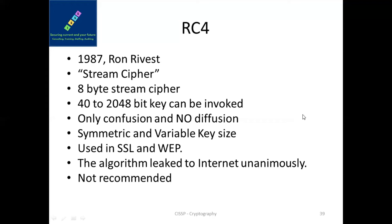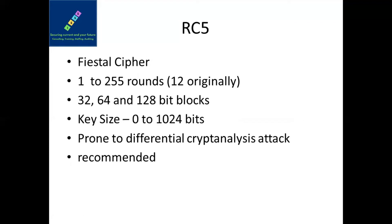This algorithm was also leaked to the internet anonymously, and it is an old cipher not recommended at the moment. RC5 is another cipher from Ron Rivest, based on the Feistel cipher. It supports 1 to 255 rounds — originally it was suggested for 12 rounds — but when you invoke RC5 you can specify the number of rounds you want. Fewer rounds means faster performance.